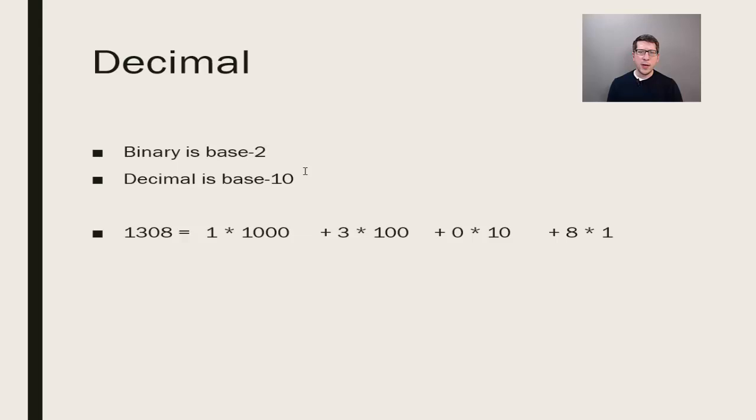Now in turn, note that for each multiplication, the second number is a power of 10. Let's rewrite this one more time as 1 times 10 to the third, 3 times 10 squared, 0 times 10 to the first, and 8 times 10 to the 0.